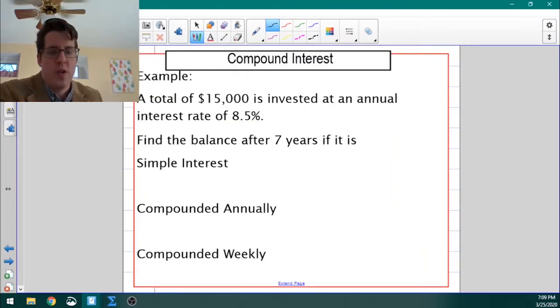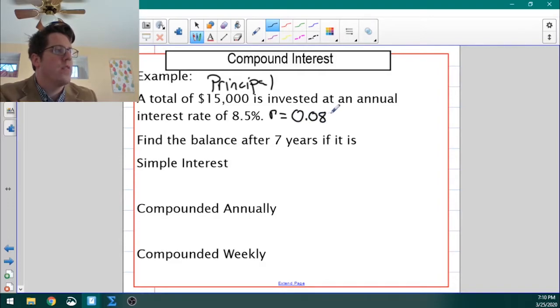Okay, so first example, a total of $15,000, that is our principal. Principal is the amount that you invest initially. For starters, everything we're going to do is just making an investment and then waiting. You will have a WebAssign problem that says what happens if you add money to your investment each year. An annual interest rate of 8.5%. So this is going to be a rate of 0.085. Remember that if something is given as a percent, you need to write it as a decimal.